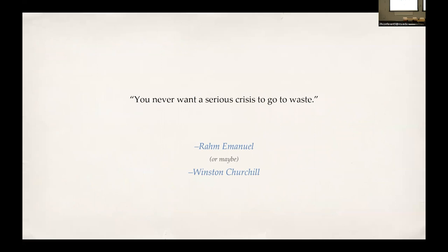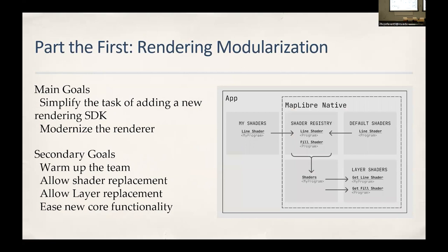Rather than just fixing the one thing, you never want an opportunity like this to go to waste. There's a lot of other technical debt around the renderer. The first part of the plan was to modularize the renderer — essentially break it into pieces so we could lift it up, fix the foundations, put it back down on those foundations, and then swap out the foundations for Metal. The main goal was simplifying the task of adding a new rendering SDK.